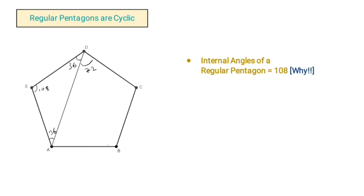Since the full internal angle of the pentagon is 108°, the remaining portion of this angle is 72°. And the opposite angle is also 108°, an internal angle of the regular pentagon. So the opposite angles of this quadrilateral are supplementary, making quadrilateral ABCD cyclic.